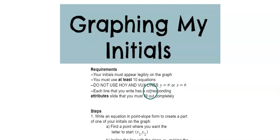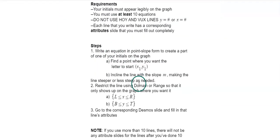Each line that you write will have a corresponding attribute slide that you fill out completely. All of the steps are written here for you so you can read them again, but I'm going to walk through the steps here on this video. Please note that if you use more than ten lines to write your initials, you will not need to do an attribute slide after you've done ten attribute slides. So you can do more if you want, but you don't have to do any of the attributes after ten.